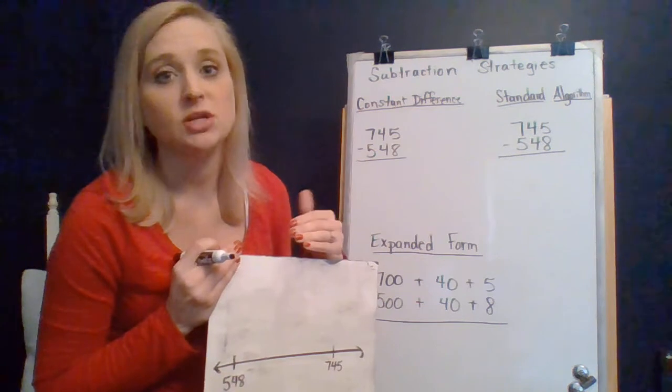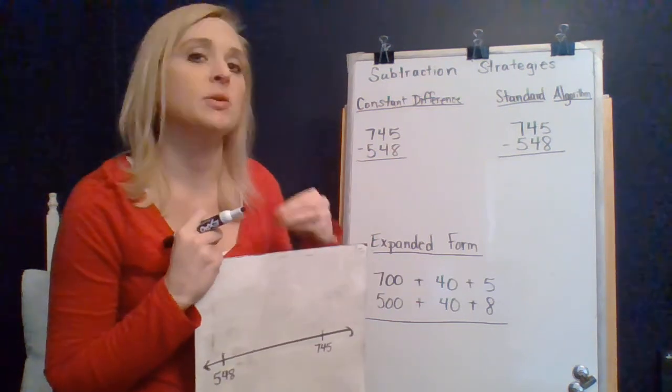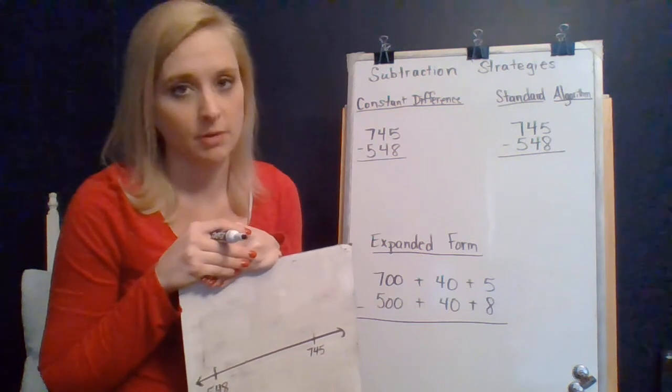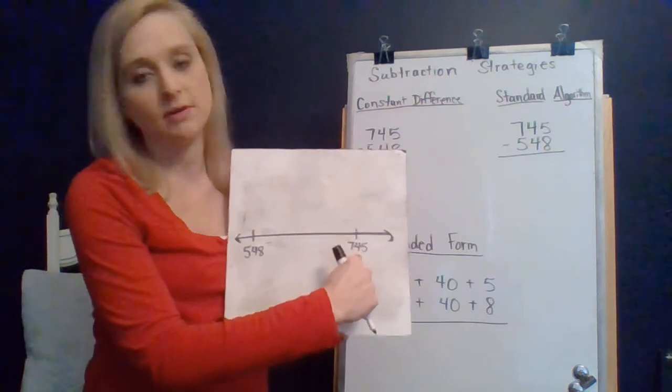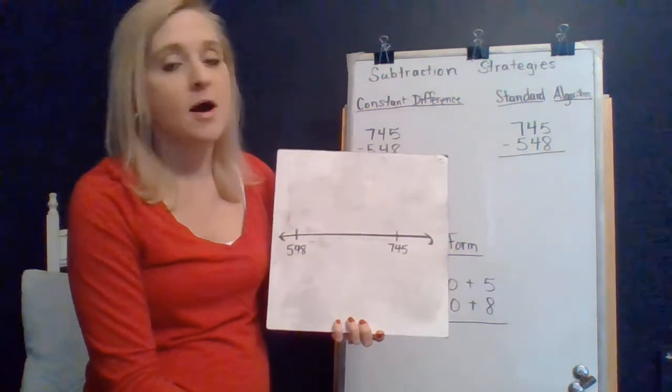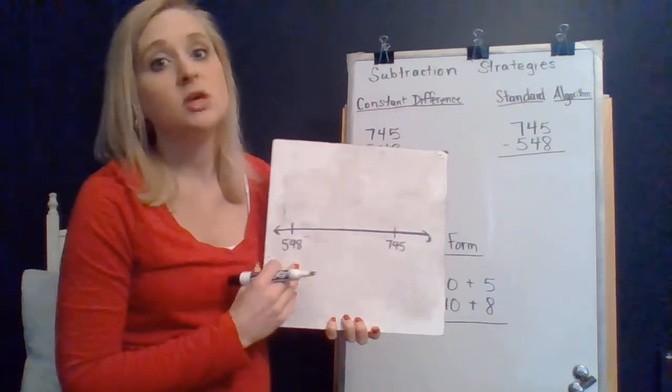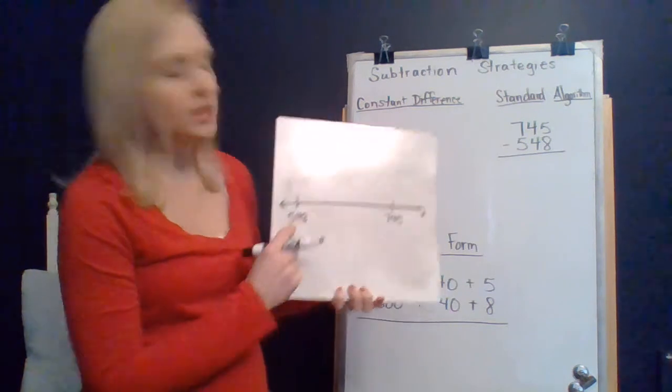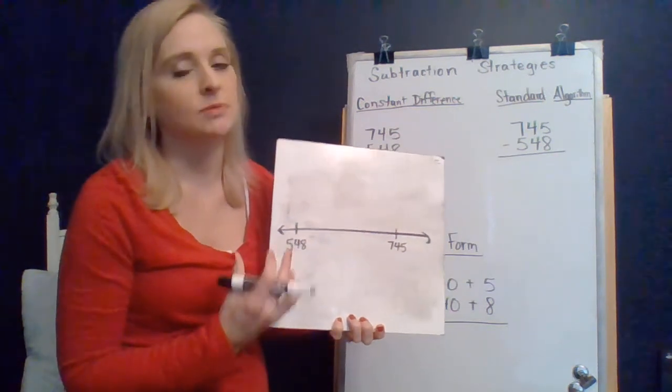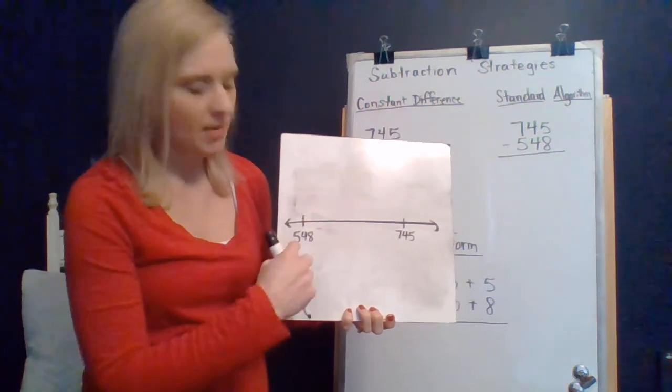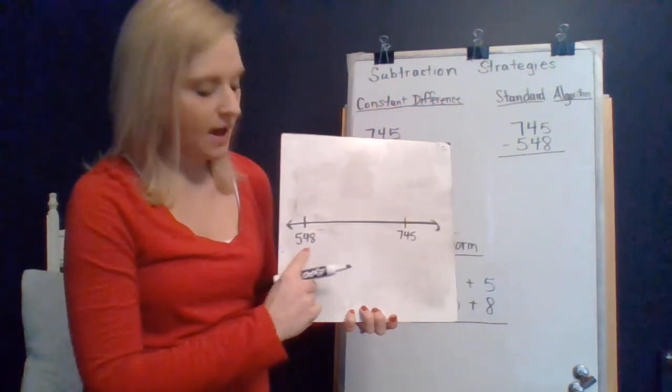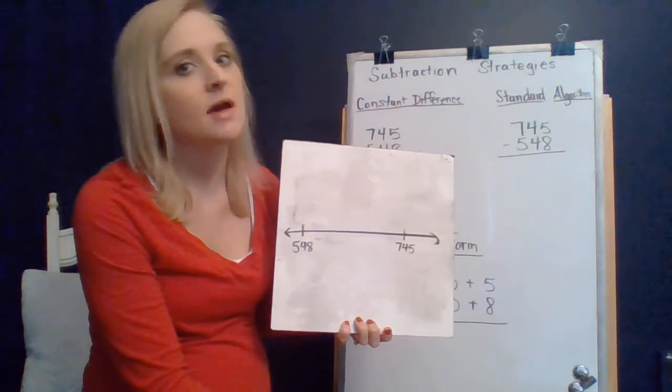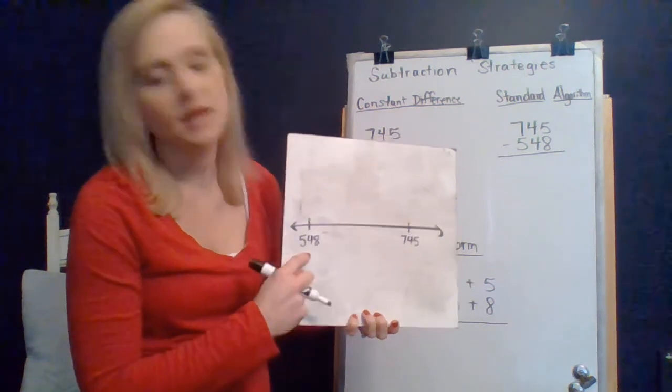So how does the constant difference strategy work? Remember, if you give a certain amount to one of the numbers, then you need to also give that same amount to the other number. So the distance remains the same on the number line. Remember, we're finding the difference between 548 and 745 when we're subtracting. So likewise, if you take from a particular number, you need to take the same amount from the other number so the distance remains the same. And so kind of to review a visualization of that, if I'm looking at 548, and I want to get that to a friendly number since that's what I'm removing, I probably need to add to this. I think that would be easier for me.